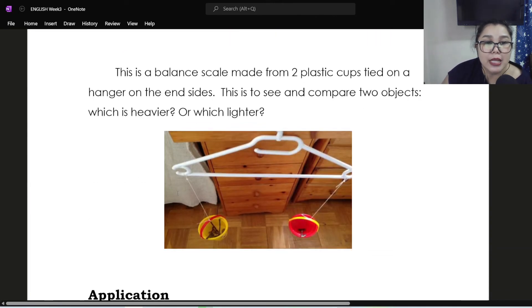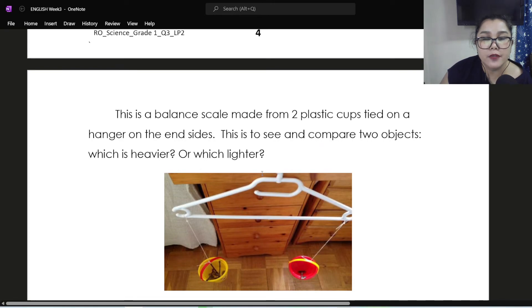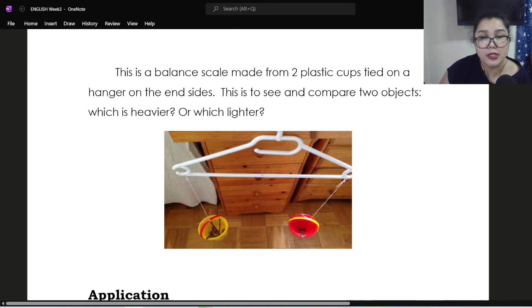This is a balance scale made from two plastic cups tied on a hanger on the inside. This is like a DIY alternative if you don't have a platform balance and you just need to identify which one is heavier or which one is lighter. So you can make use of this one. This is to see and compare two objects. Which is heavier or which is lighter. For you to easily identify which one has greater mass.